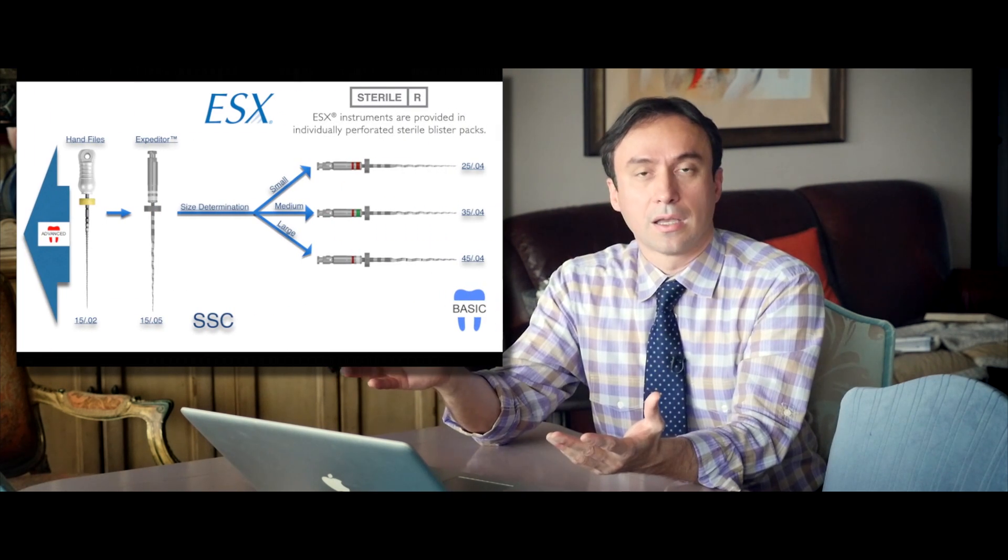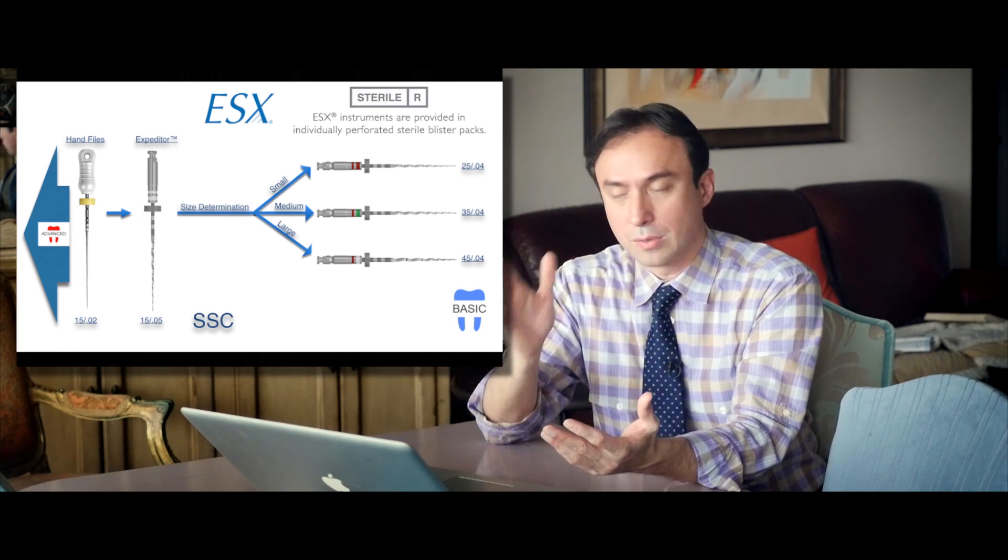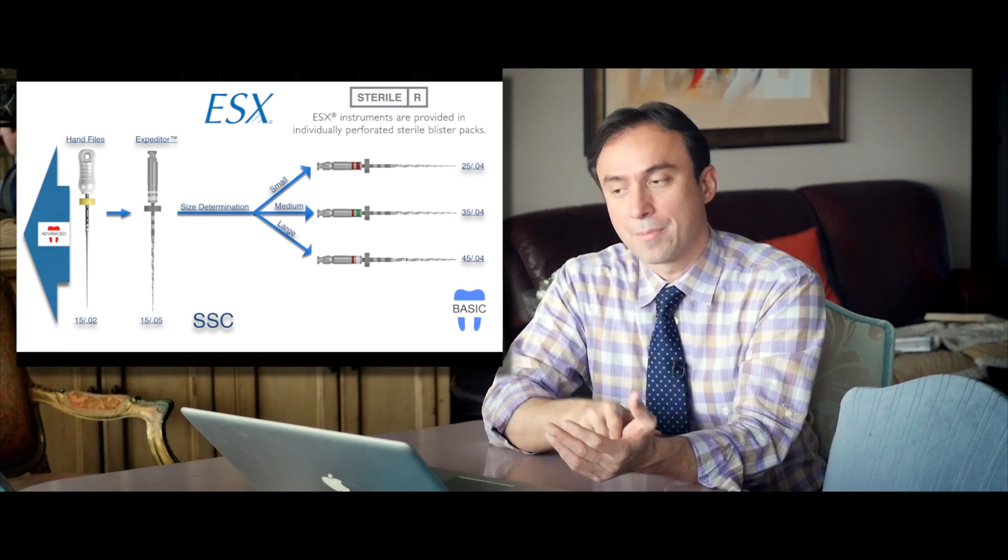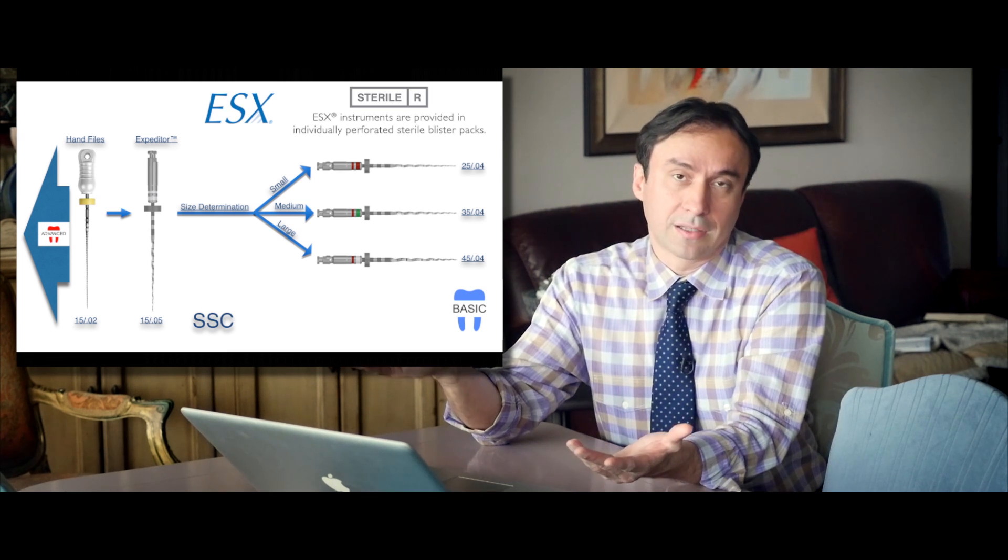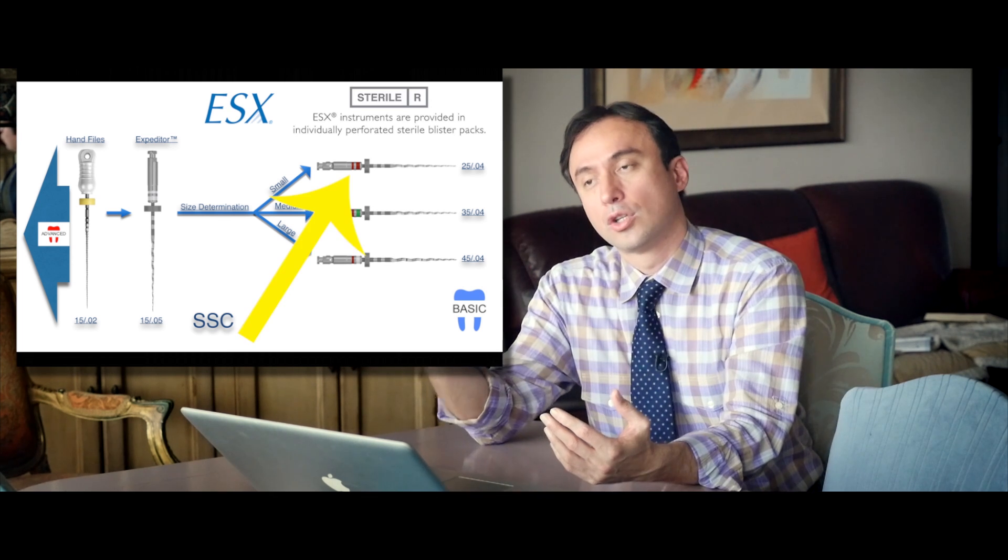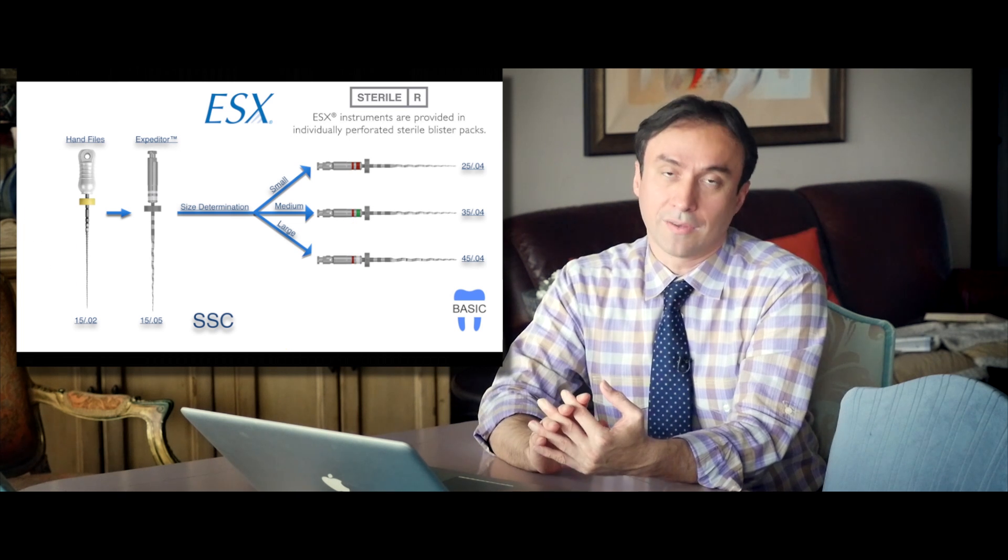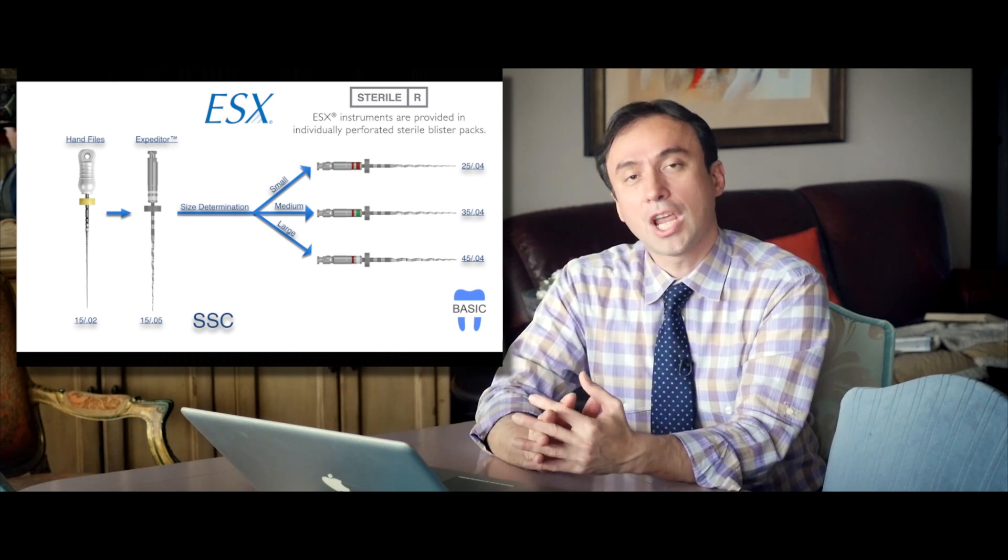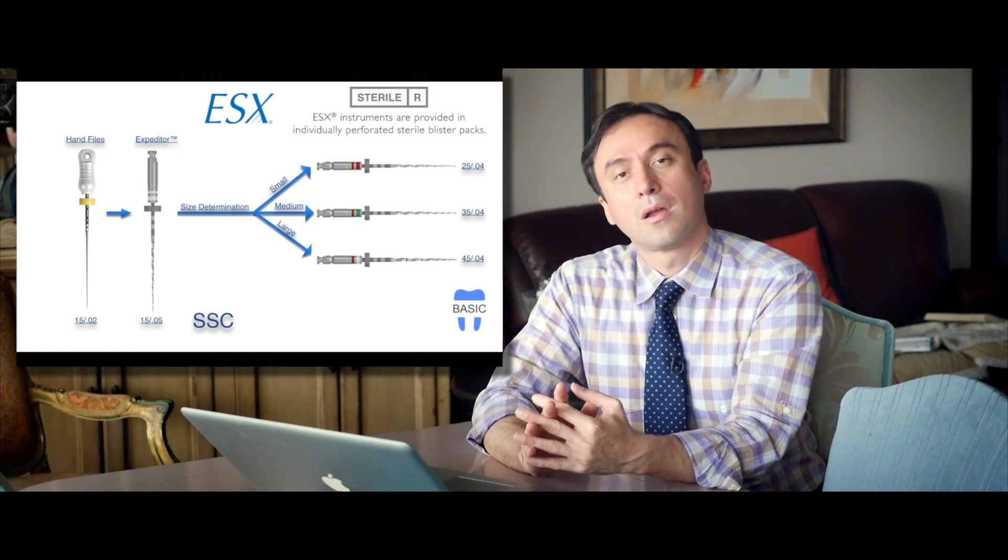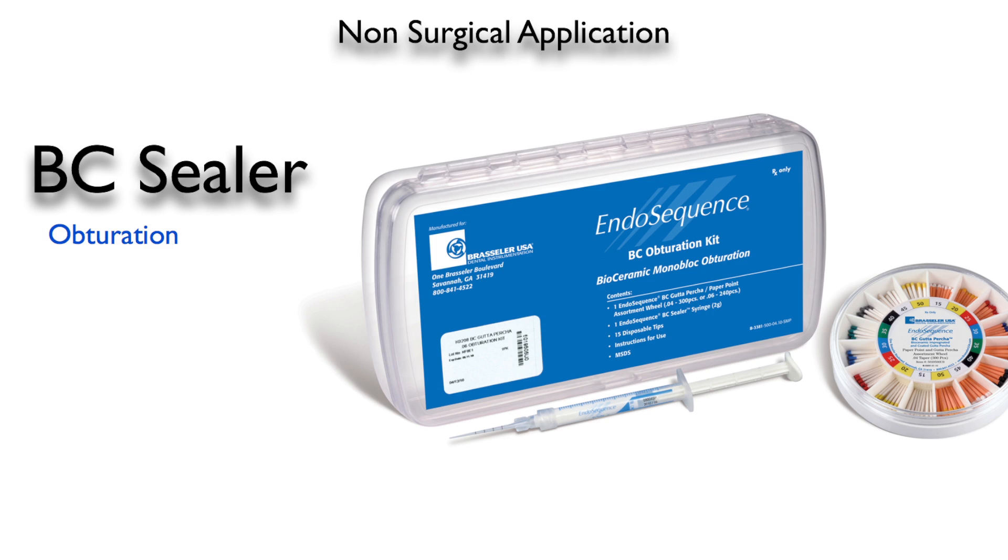And in those cases, I do the expediter next, which is the 1505 SSC and I do that until it gets down to the apex. And once that's to the apex, then I usually, given a tight canal, it would end up being either a size 25 or a 35 for that given canal. And that's it and then I have finished the shaping and then I'm ready for the obturation using a matching BC cone and using hydraulic condensation.